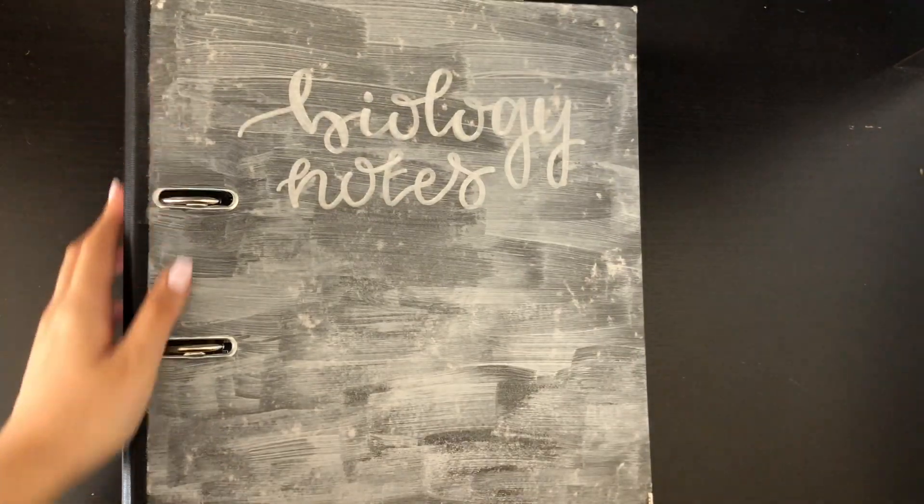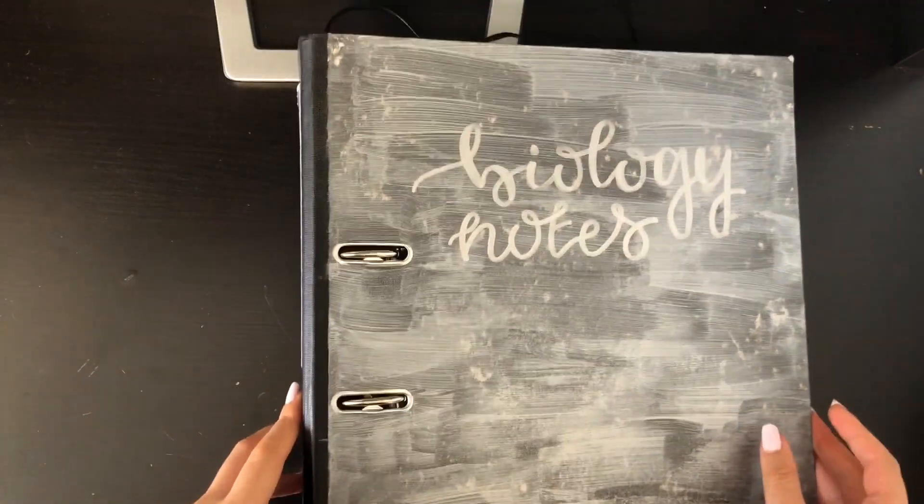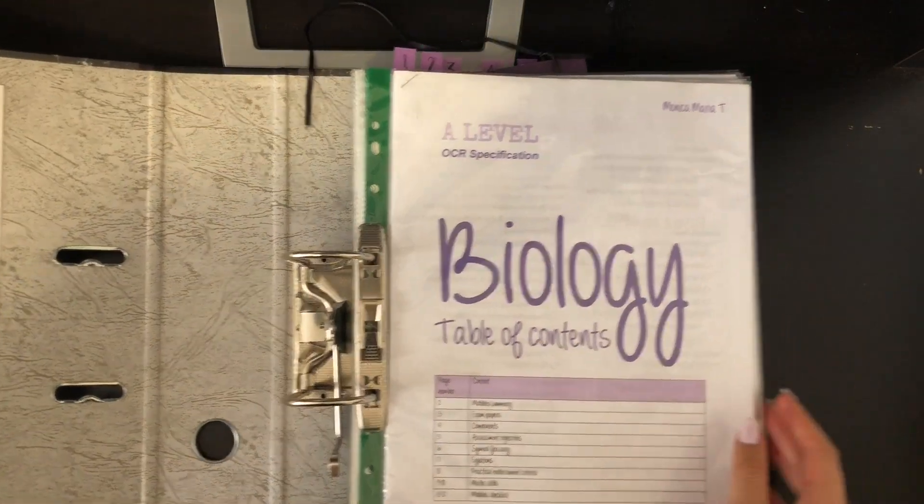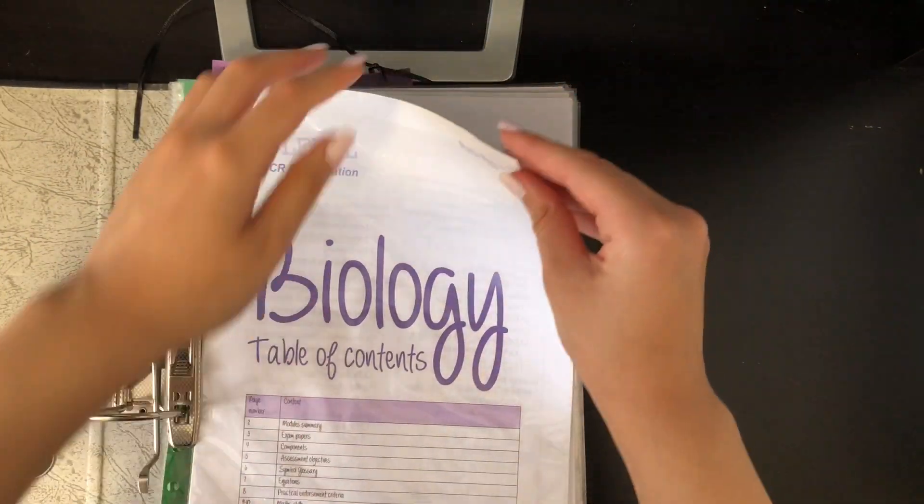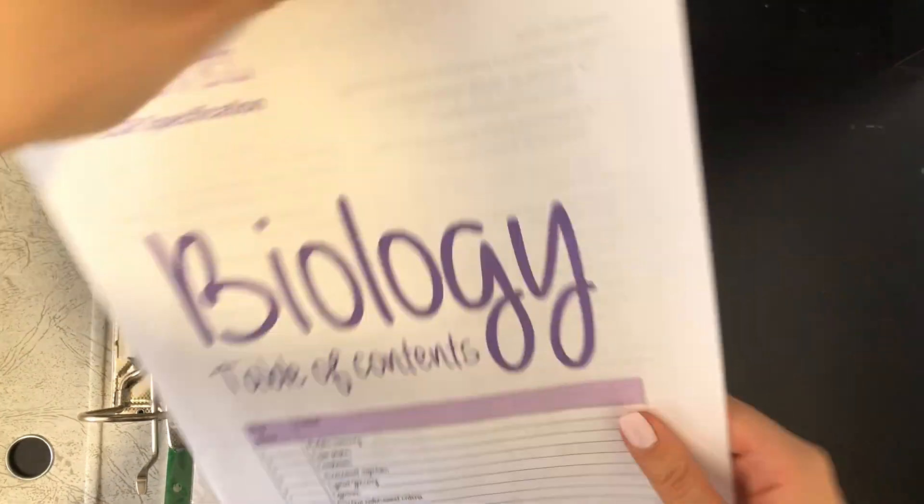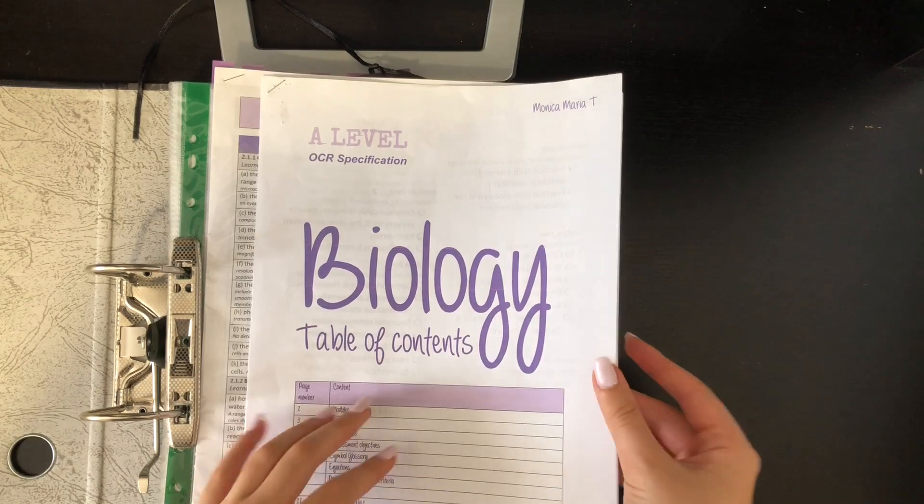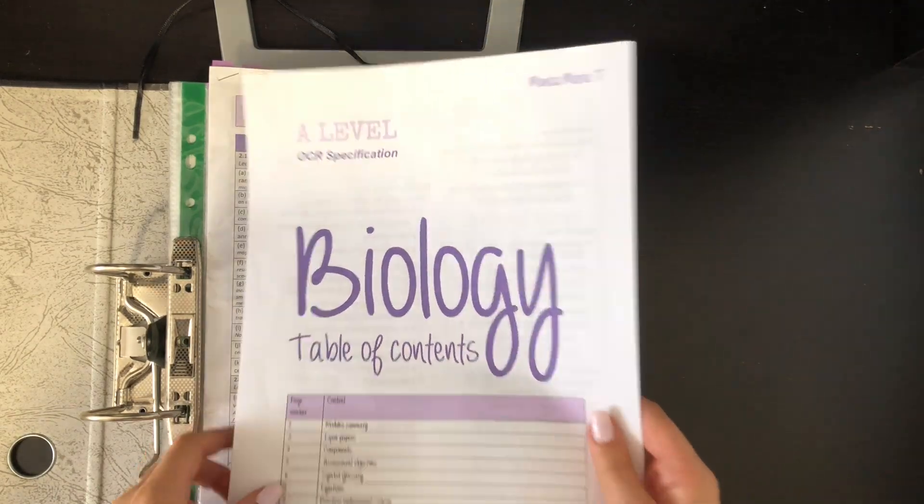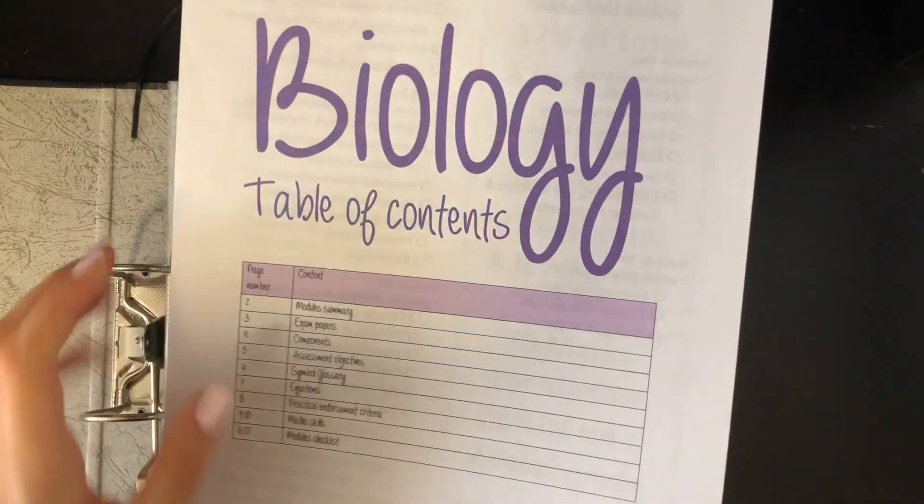So I got this simple lever arch file from QConnect on Amazon, and I'll just leave that link down below. But the first thing you see when I first open it is this little summary sheet that I made the summer before I started Sixth Form. I made a little table of contents at the very front.